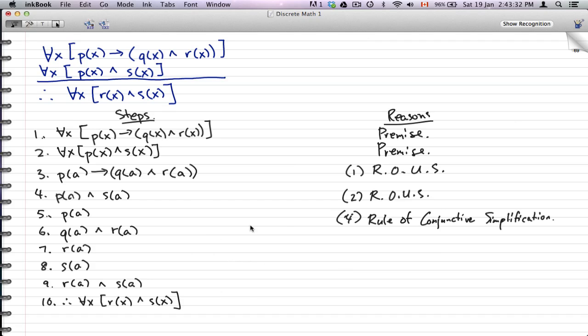So q(a) and r(a)—what we have here is six: q(a) and r(a). So that would be five and three.